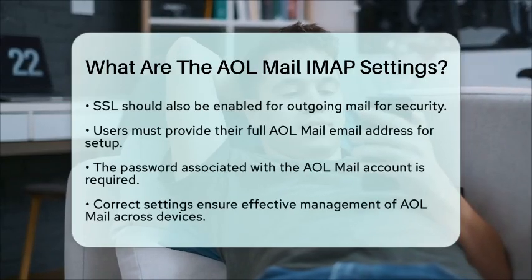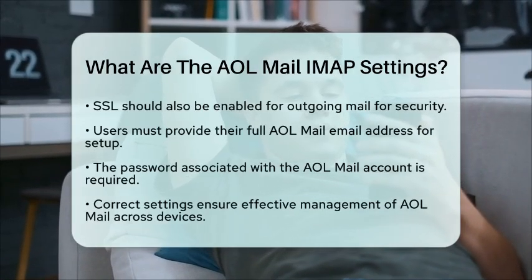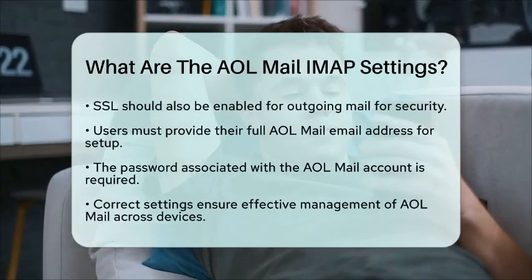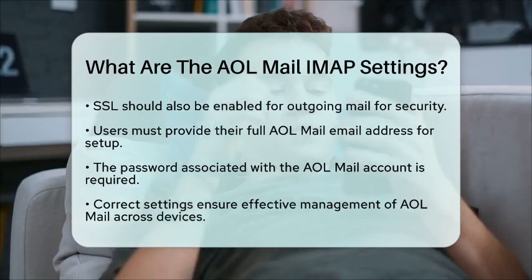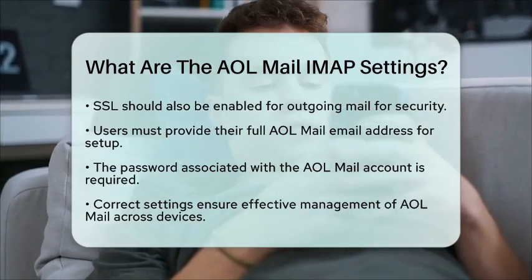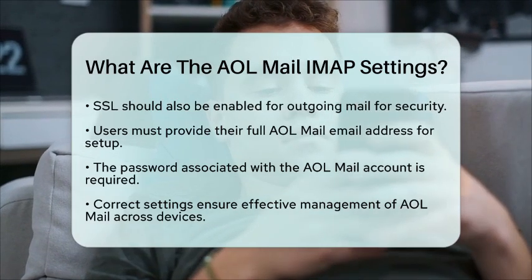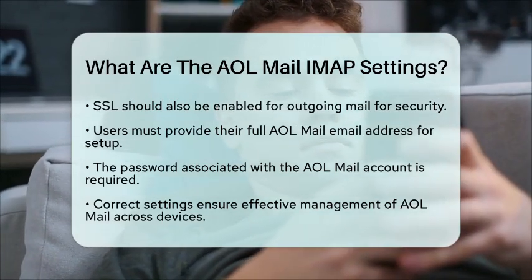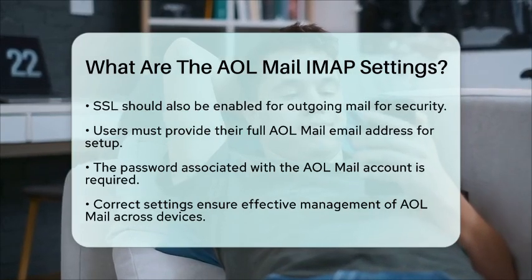In summary, to configure your AOL Mail using IMAP, you will need to input the incoming server as imap.aol.com with port 993, and the outgoing server as smtp.aol.com with port 465, both requiring SSL security. With these settings, you will be well on your way to managing your AOL Mail efficiently across all your devices.